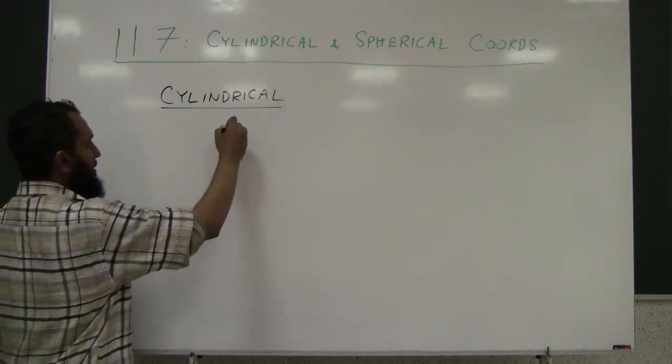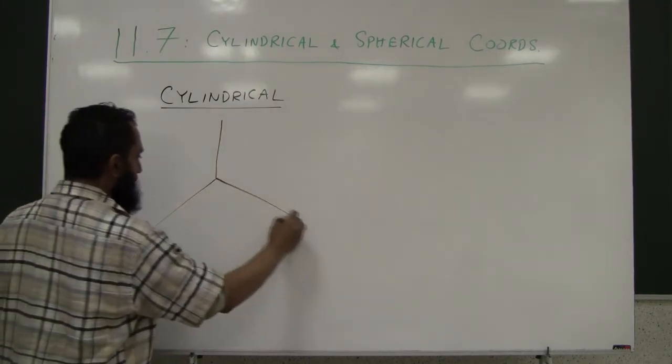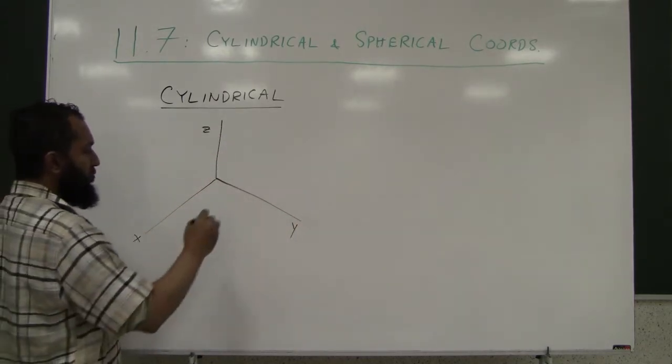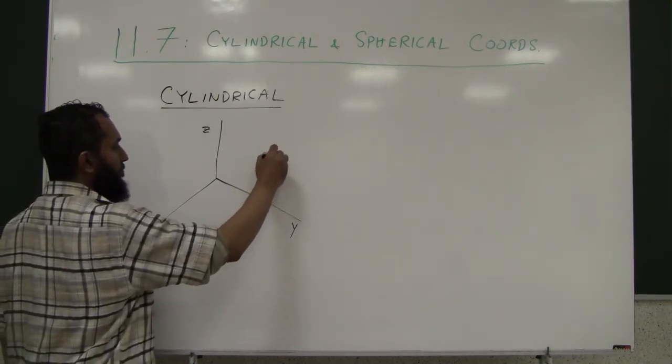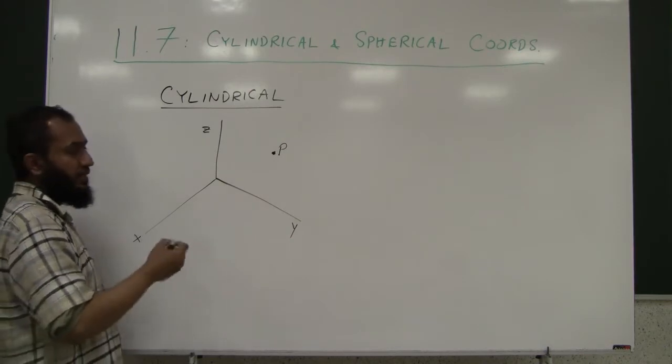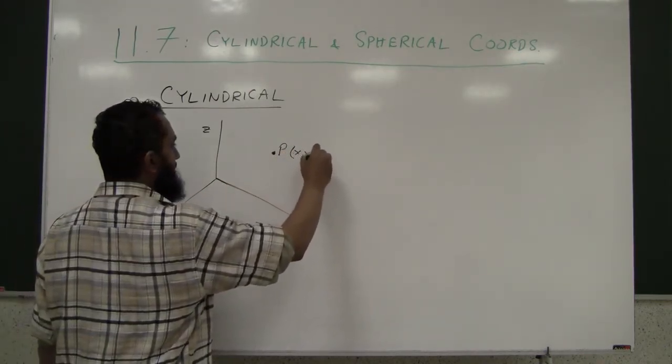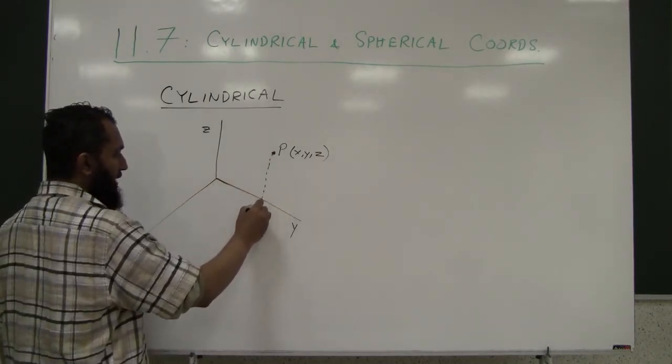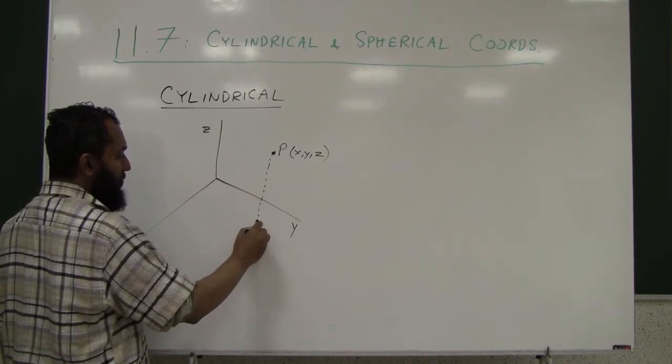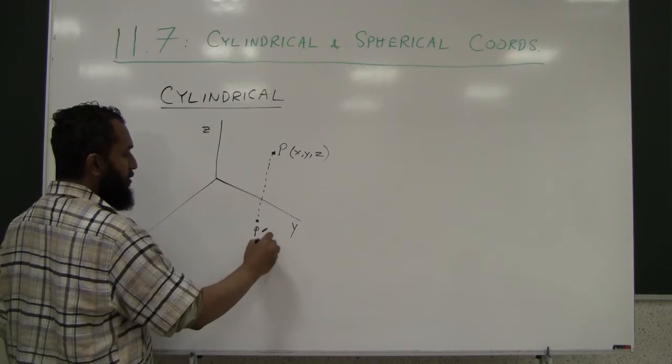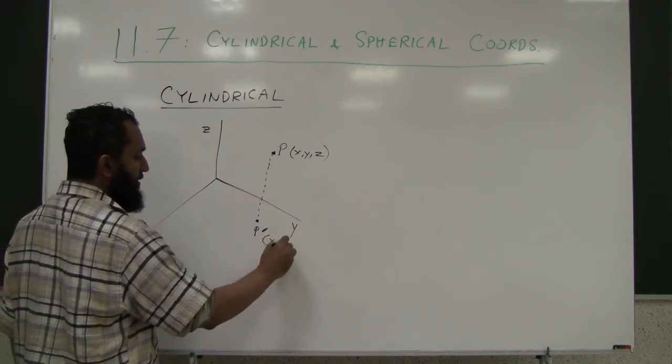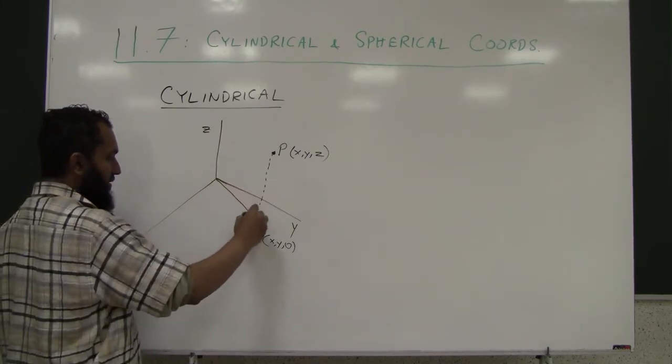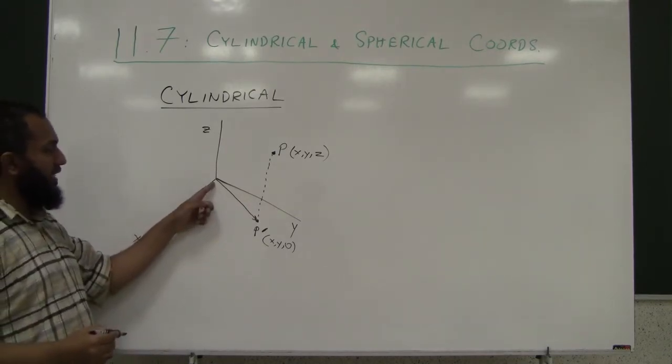The way it works is, you have your 3D coordinate system, like Y, Z and X-axis and you have a point P with coordinates XYZ, some XYZ values. What you do in this cylindrical coordinate system is you project this point onto the XY floor, called P prime. P prime's coordinates will be same X, same Y, where 0 is the Z and then you make a ray from the origin of the XY plane to this point.